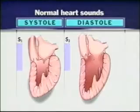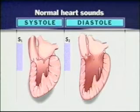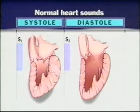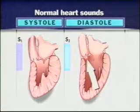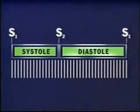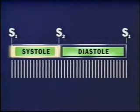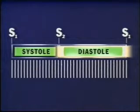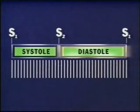Normally, percussion reveals pulmonary resonance laterally and cardiac dullness medially. Before auscultating the heart, let's review normal heart sounds. Closure of the heart valves creates a pair of audible heart sounds. The first sound, S1, accompanies mitral valve closure. The second sound, S2, accompanies aortic valve closure. Pulmonic and tricuspid valve closure may contribute to these sounds. Ventricular systole occurs between S1 and S2. Ventricular diastole occurs between S2 and the next S1. Because diastole usually lasts longer than systole, you can identify the two sounds.